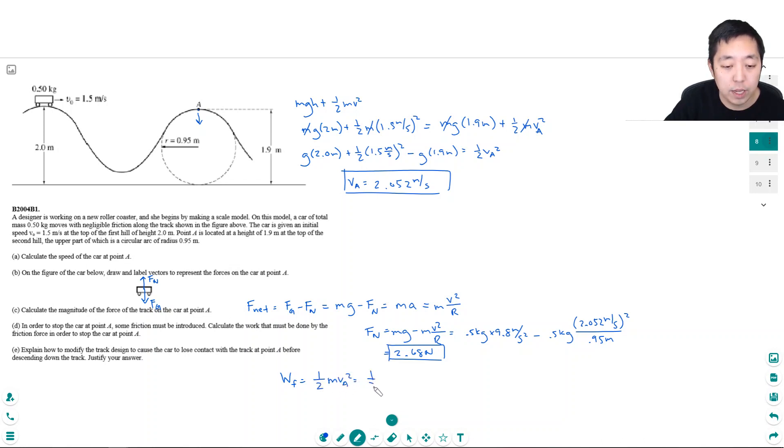So it'd be one half times 0.5 kilograms times 2.052 meters per second squared. 1.053 joules.